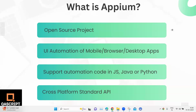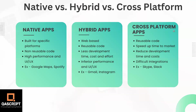APM also enables us to test real devices, emulators, and simulators. So this was a brief about what APM is and what it can do. Now let's talk about the different types of apps, how they are built on different platforms, and how APM can automate all of these different types of apps. In order to understand this, we need to first understand what is a native, what is a hybrid, and what is a cross-platform application.